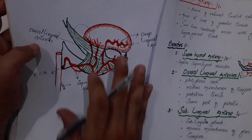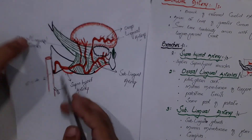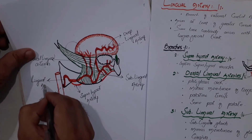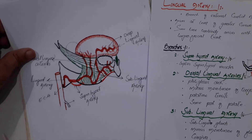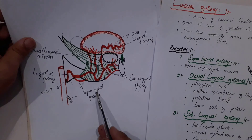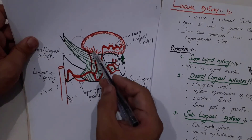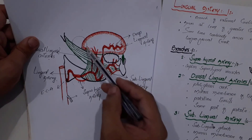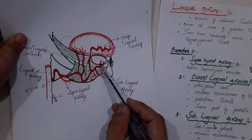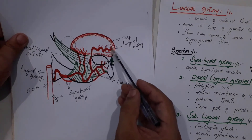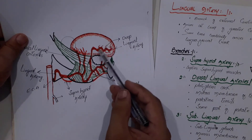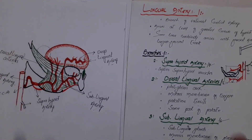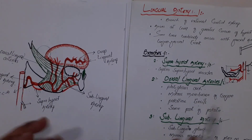These were the branches of the lingual artery, and this is its diagram. The lingual artery gives off, first, the suprahyoid artery; then it moves further and gives off two dorsal lingual arteries to the posterior dorsal aspects of the tongue, glands, and mucous membranes; then the sublingual artery; and finally a branch going deep through the tongue to the ventral aspects, which is the deep lingual artery.